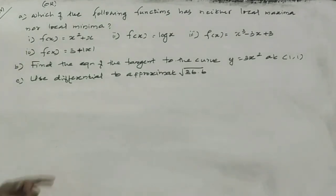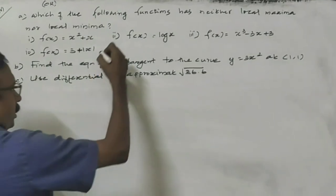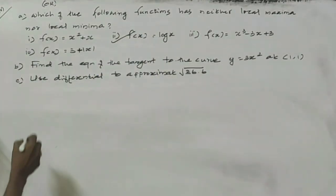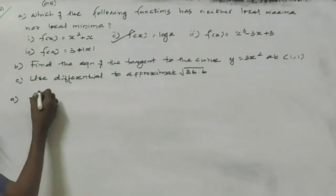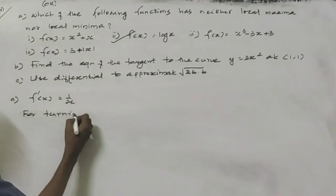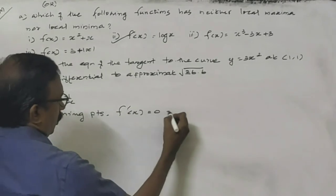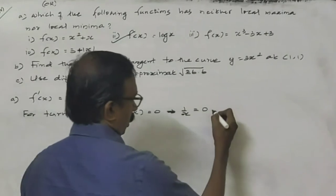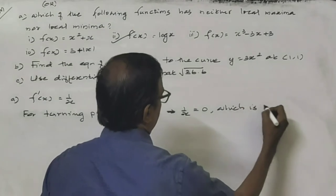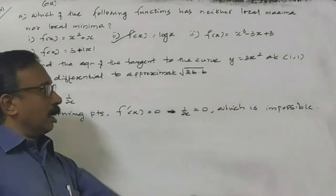In 2016 March, the first question is: which of the following functions has neither local maxima nor local minima? The derivative analysis shows that 1/x equals 0 is impossible, so there are no turning points.